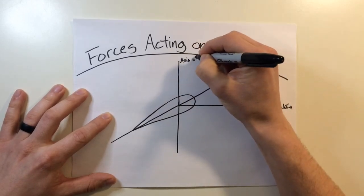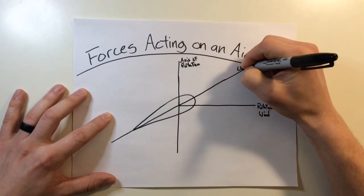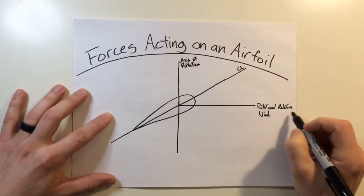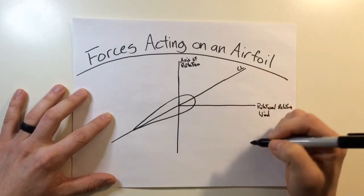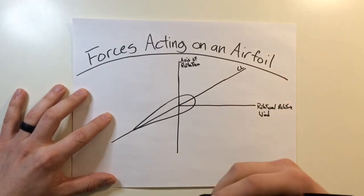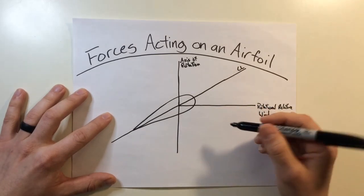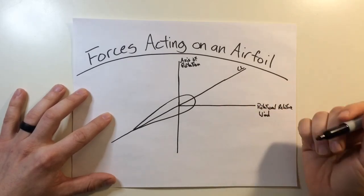Once again, axis of rotation. And I should have labeled it earlier, but here's our cord line. Now this rotational relative wind is sometimes called the tip path plane. It's the path that all the blades follow around the mast. Now due to the fact that the rotor blades follow each other along the same path around the mast with increases in pitch angle, it creates a downwards flow of air through the rotor system.